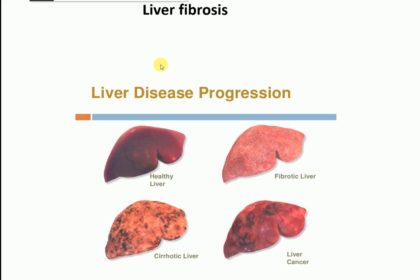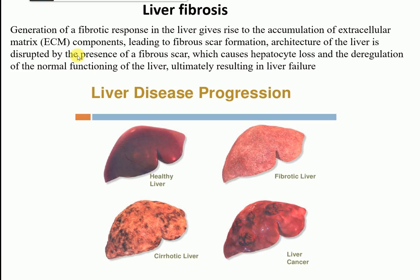So what is actually liver fibrosis? Liver fibrosis is a generation of a fibrotic response in the liver that gives rise to the accumulation of extracellular matrix components, leading to fibrous scar formation. The architecture of the liver is disrupted by the presence of the fibrosis scar - you can see here the liver architecture is very nice, but when there is a fibrosis scar, it gets distorted.